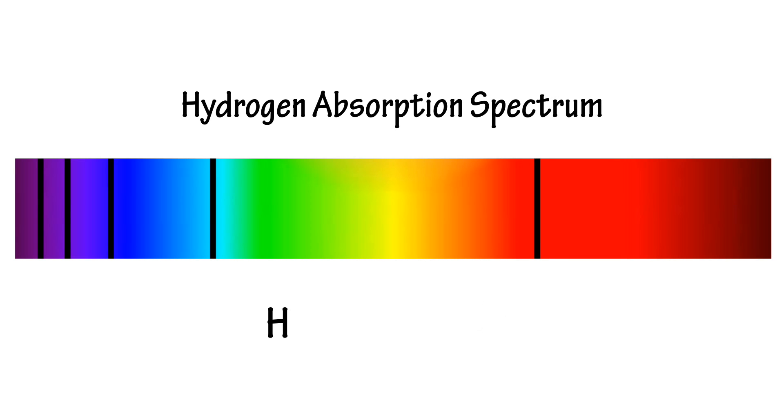These are the spectral lines for hydrogen, and the black lines appear at the particular wavelengths that are absorbed by hydrogen.